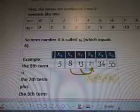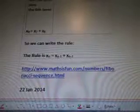So, for example, the 8th term is the 7th term plus the 6th term. So, 8 plus 7. They just keep adding up with each other. So, we can write the rule. The rule is X_N equals X_(N minus 1) plus X_(N minus 2).